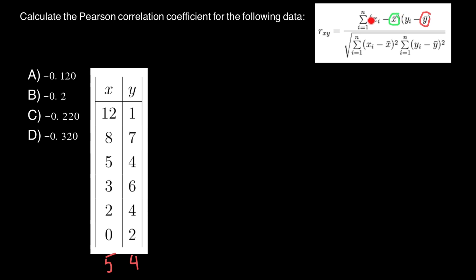Now let's say what we see in this parenthesis is going to be A. And what we see in this parenthesis is going to be B. Our following columns are going to be A, B, A times B, A squared, and B squared.